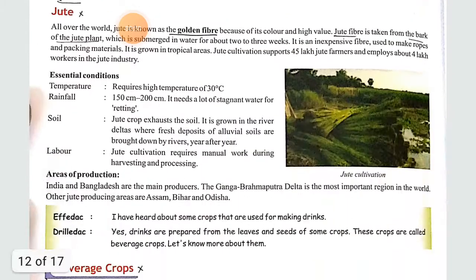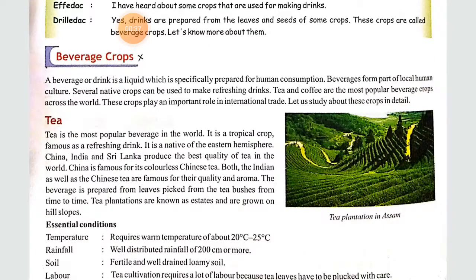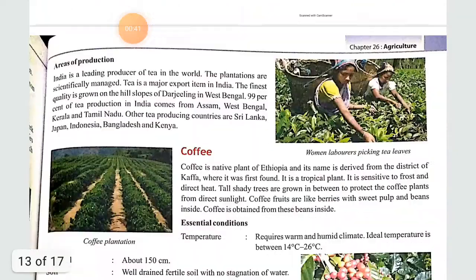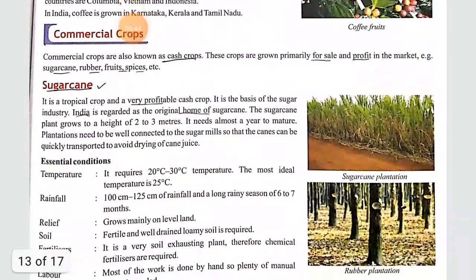Next is jute, which is not important from an exam point of view, so we won't read it. We have a lot more syllabus to cover. Then there are beverage crops — tea and coffee — which are also not important for the exam.